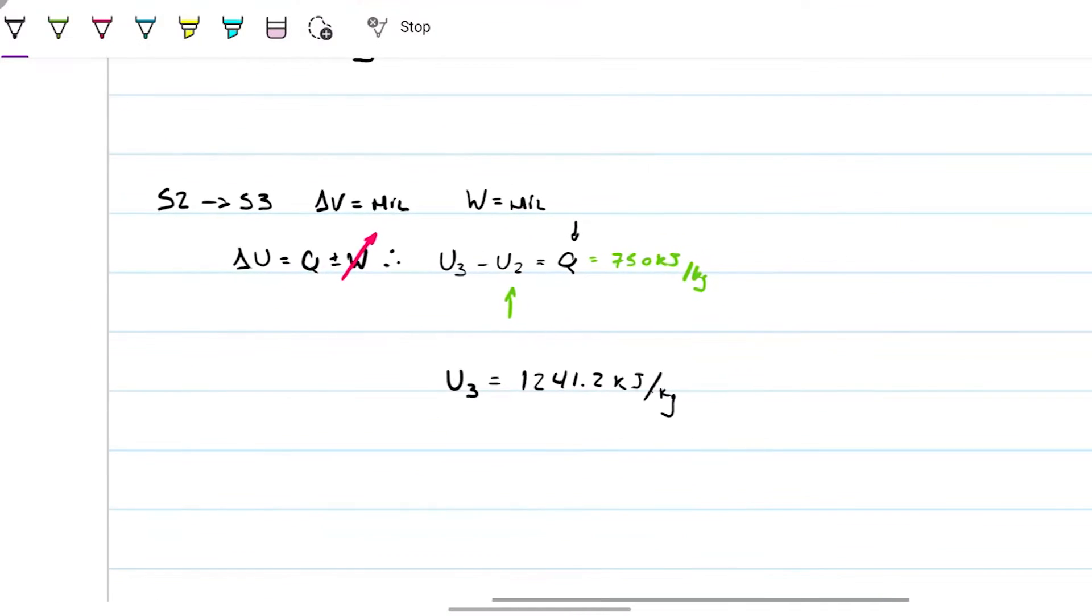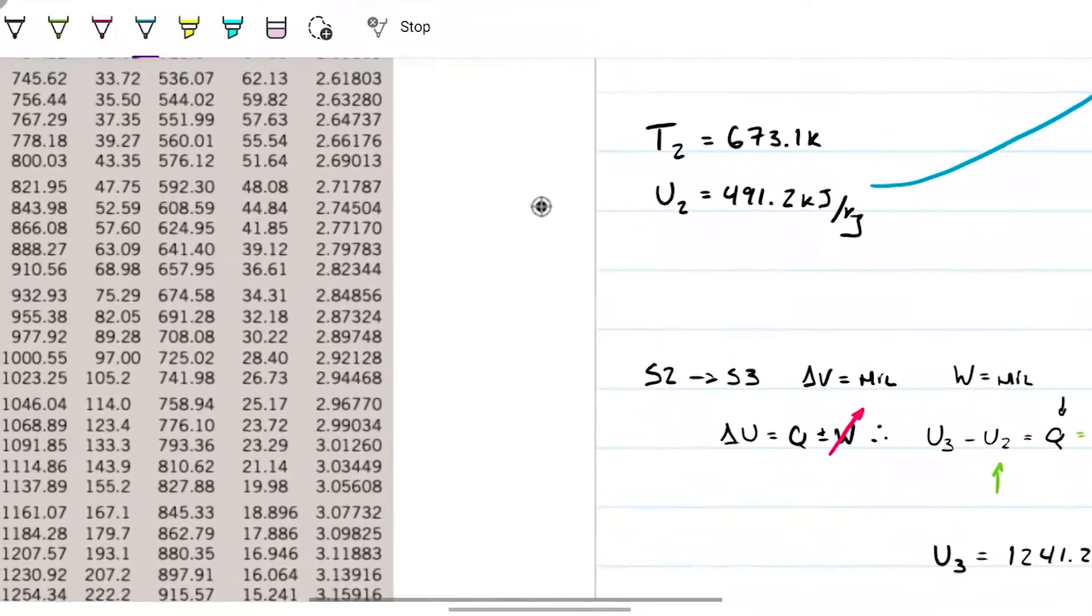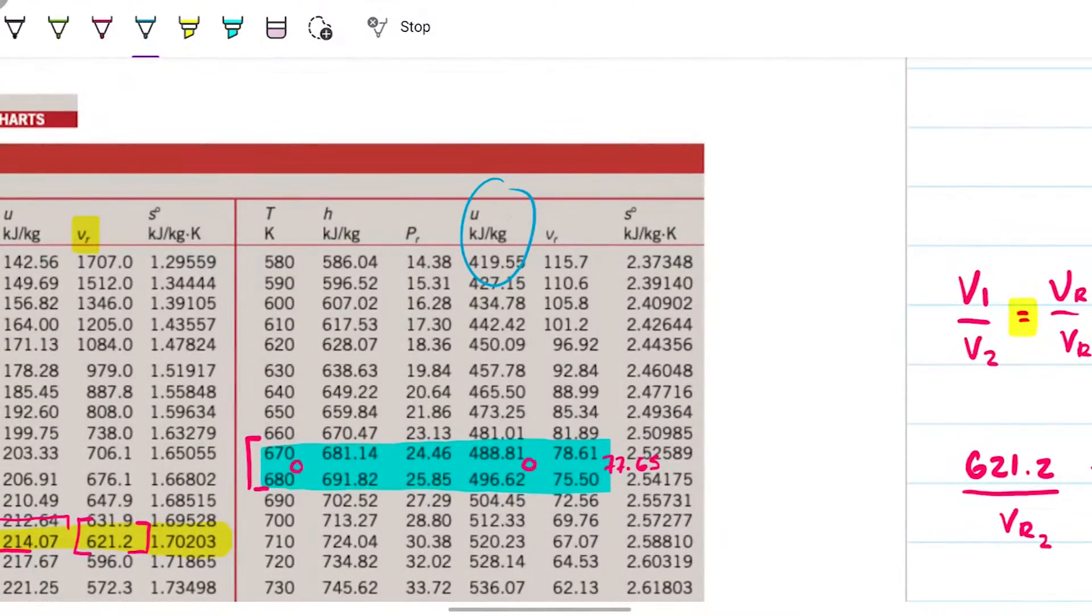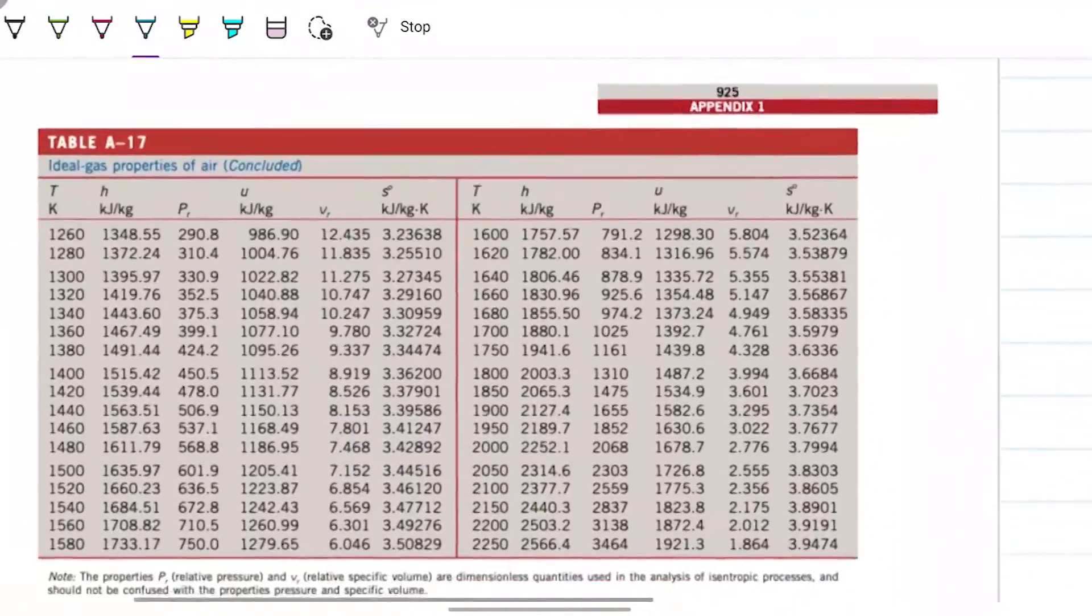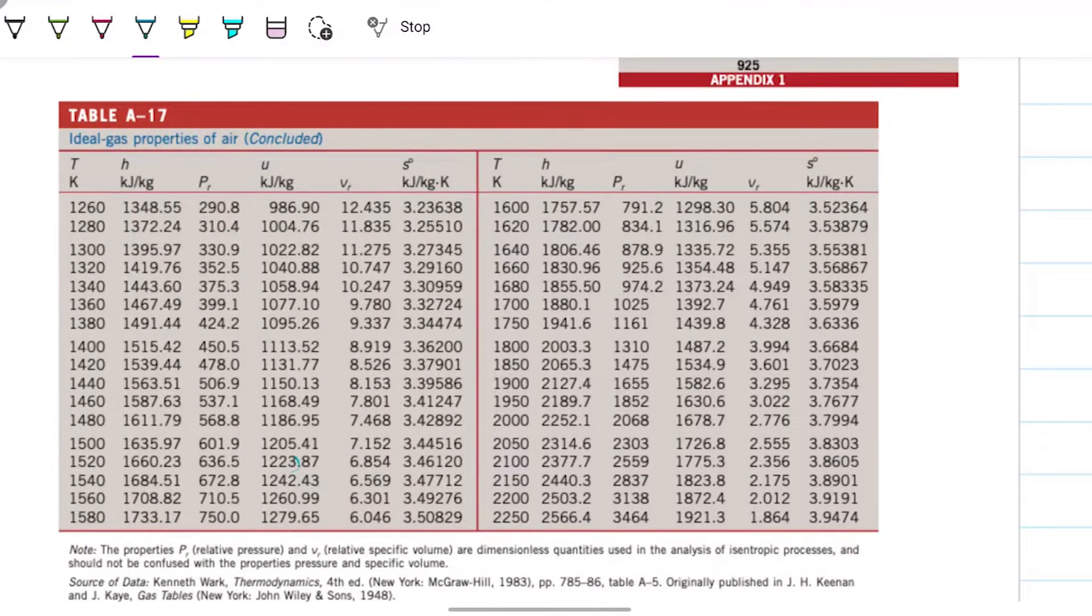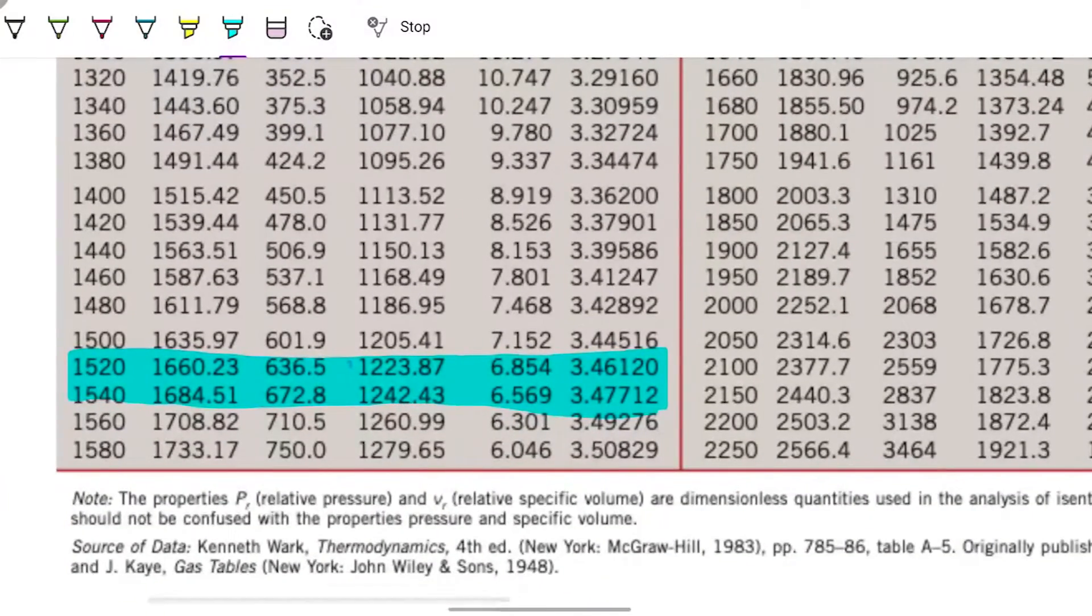I'm looking for VR₃ so I can use VR₃ to calculate VR₄. So I'm looking for 1241 in this column here, internal energy. 1241, 1242, so it's right between these guys. Temperature 3, which is actually one of the things I need to find, is between 1520 and 1540. And to be able to find it, I just need to interpolate for 1241.